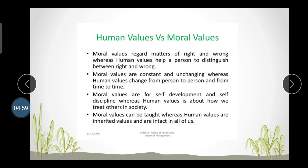Regarding human value versus moral value: moral value concerns matters of right and wrong, whereas human values help a person distinguish between right and wrong. Moral values are constant and unchanging, whereas human values change from person to person and over time, since situations in life may differ. Moral values are for self-development and self-discipline, while human values are about how we treat others in society. Moral values can be taught, whereas human values are inherent — inherited from our heredity.